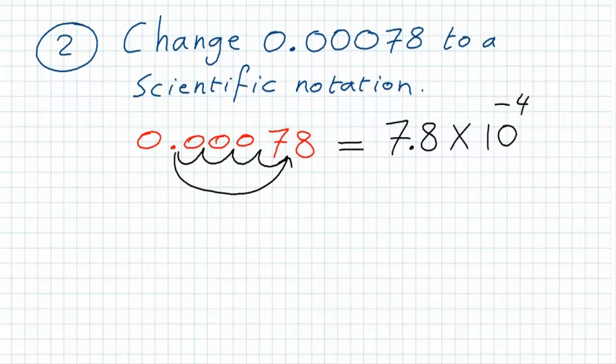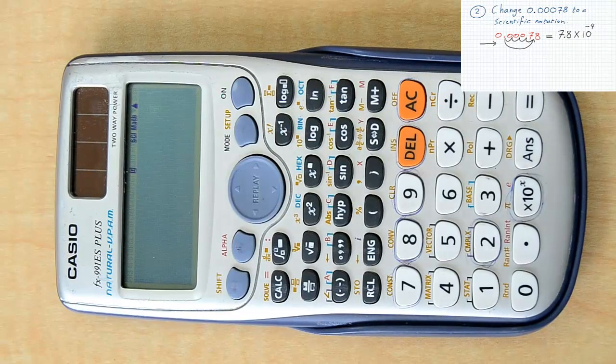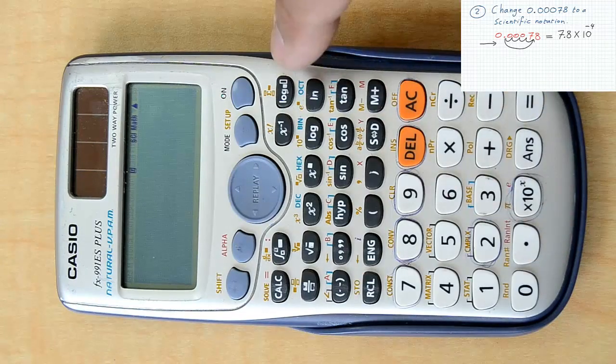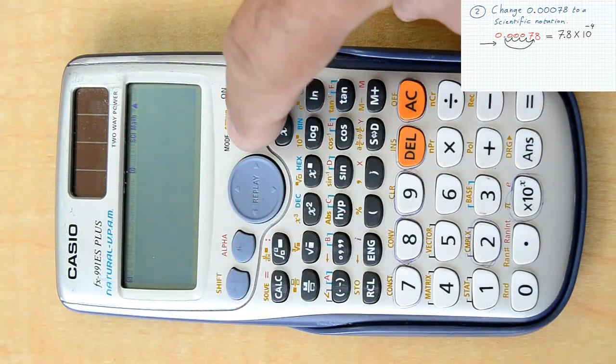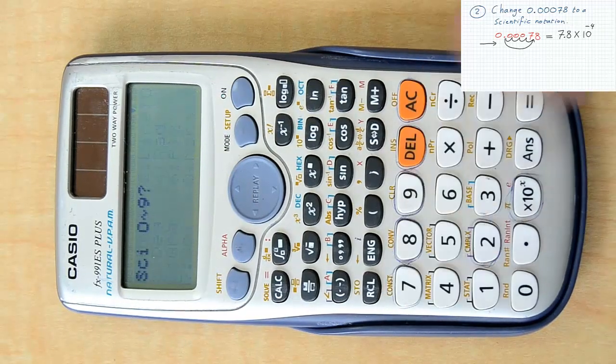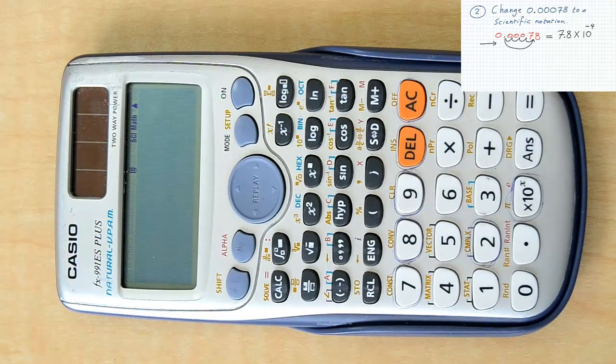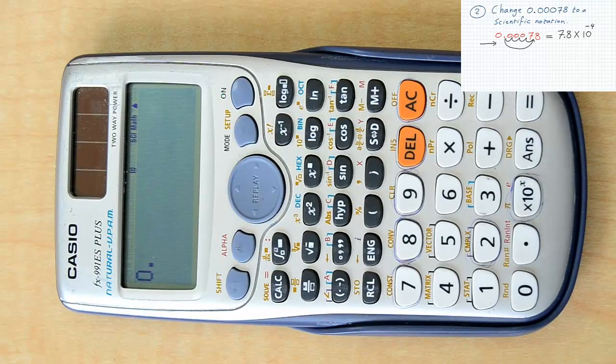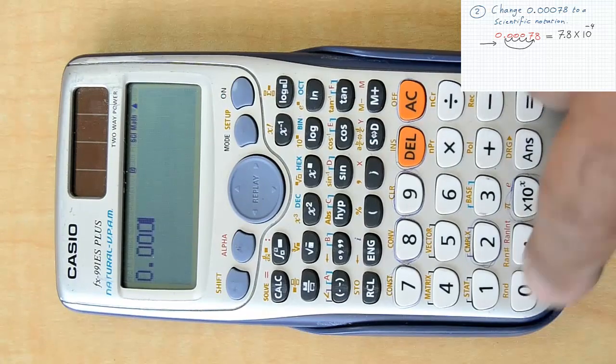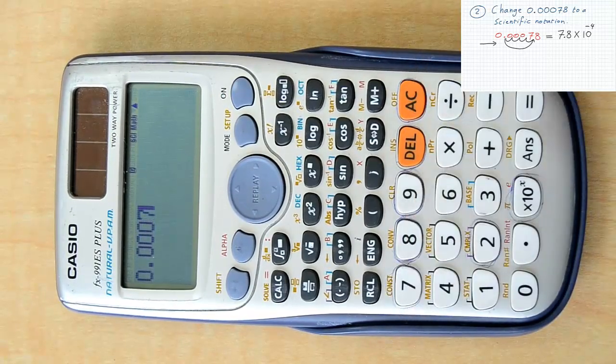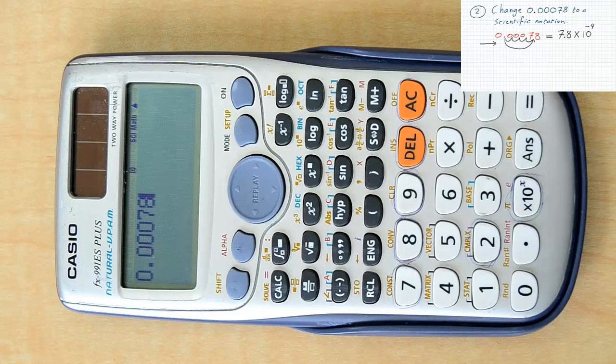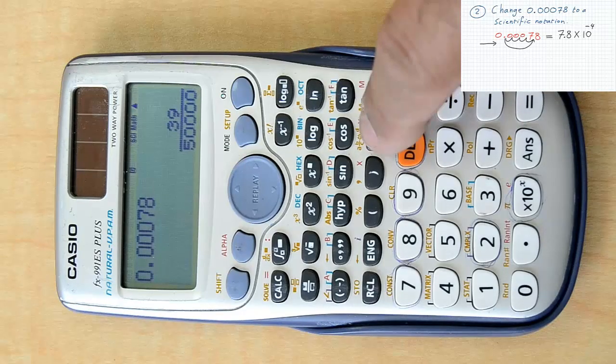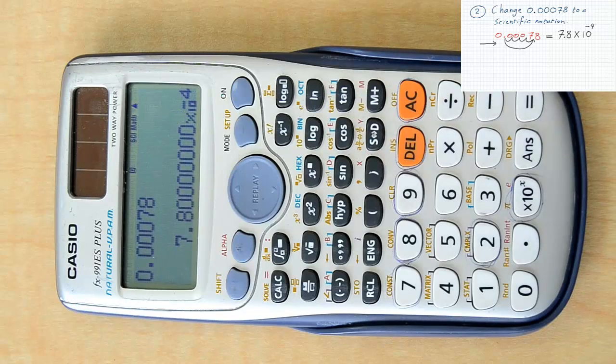as a power, since we came from the left side, which is the negative side. Doing this with our calculator, we just put our calculator in the scientific mode the same way we have done with the first example: pressing shift, then mode, then 7, then 9, and then insert your number in the calculator and then equal. You will have the same answer.